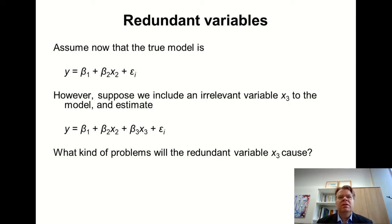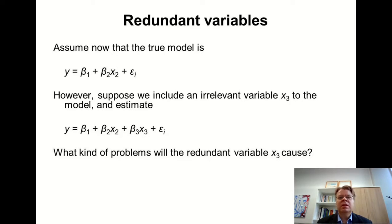So the question is: what kind of problems would including this unnecessary x3 variable cause to the estimation? My assumption here is that we are still interested mainly in estimating the slope coefficient beta — the marginal effect of variable x2 — and x3 is a nuisance parameter that we also include in the model.